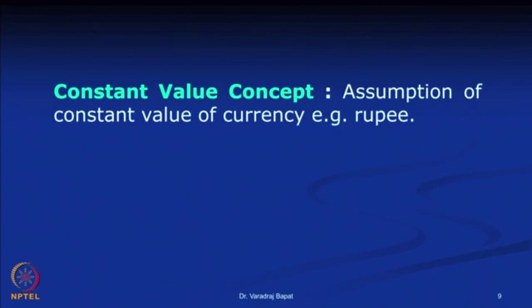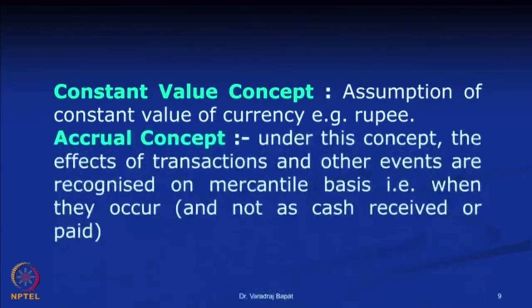The constant value concept assumes a constant value of currency — for example, the rupee. We do not record changes in the value of currency even though it changes vis-à-vis foreign currency or because of inflation. We record a transaction only when it happens with a third party; otherwise the value of currency is considered to be constant.